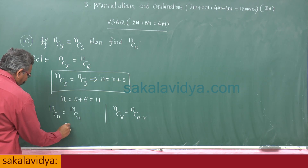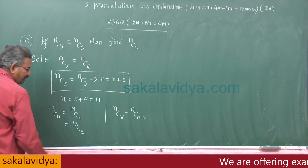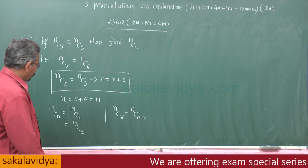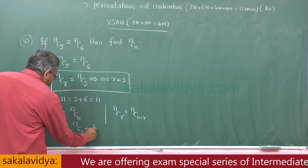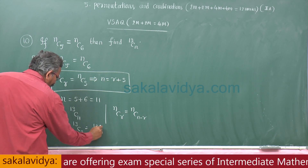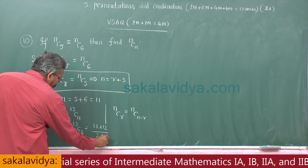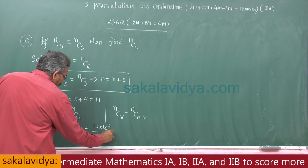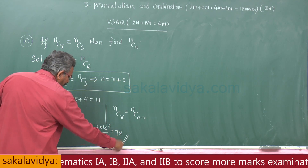Using the formula NCr equals NC(n minus r), we get 13C11 equals 13C(13-11) equals 13C2. Then 13C2 equals 13 × 12 divided by 2 × 1, which equals 78. So the answer is 78.